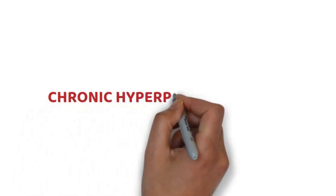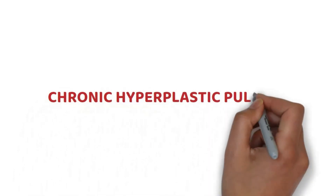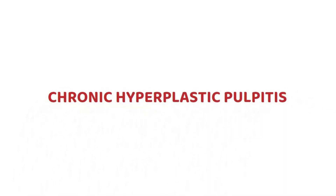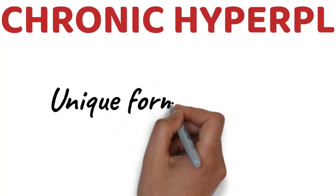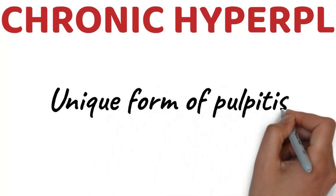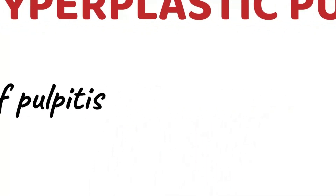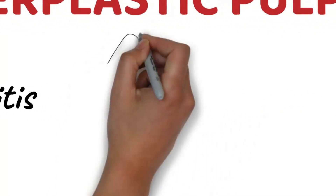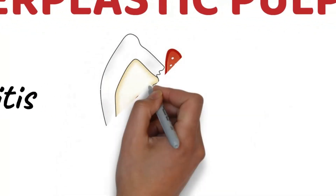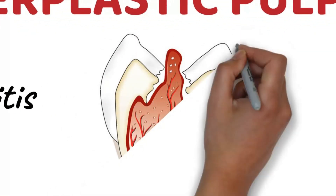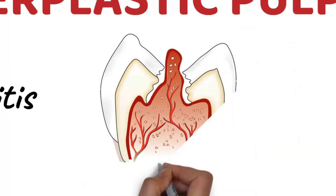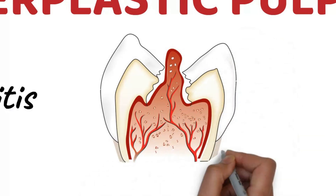Chronic hyperplastic pulpitis, also termed pulp polyp, is a unique form of pulpitis where the inflamed pulp reacts by excessive and exuberant proliferation.